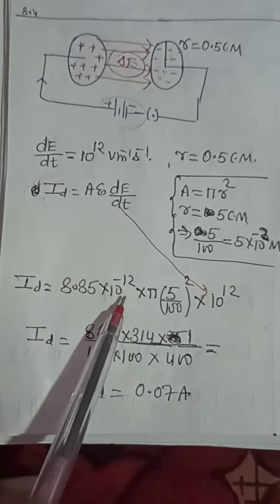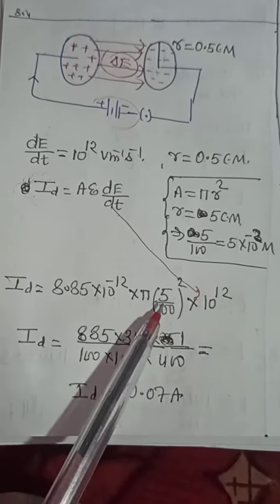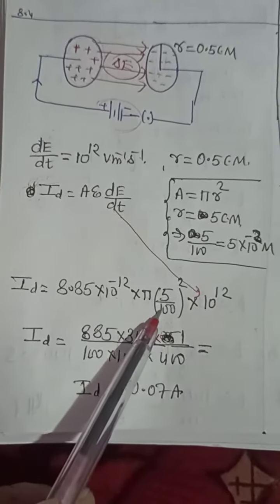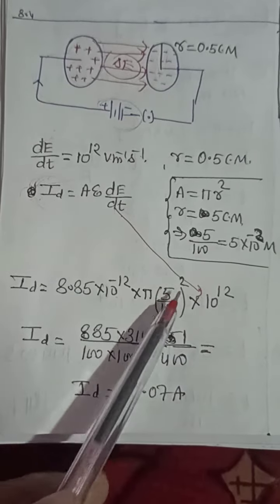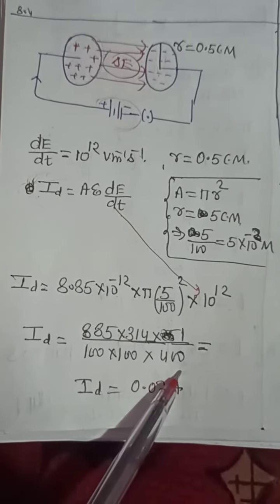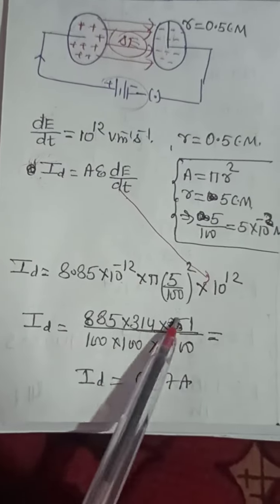Now solve this problem. Minus 12 plus 12 will be cancelled. It would be 1 upon 20. So we will find the value 1 upon 20, 1 by 400. And now we will calculate this value.